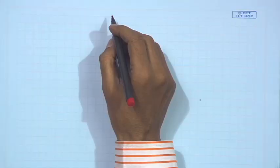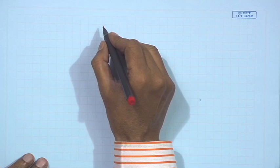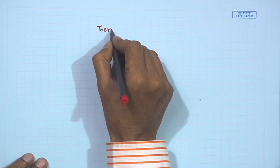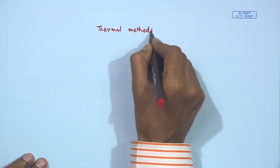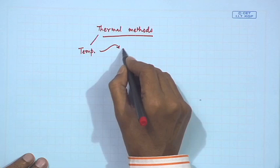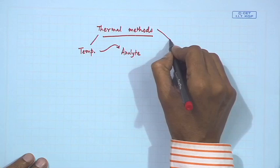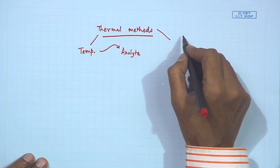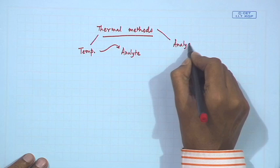Hello and welcome to this class of thermal analysis. In this lecture 31 of week 7, we will discuss thermal methods — different thermal methods where we see the temperature effect on the sample or analyte to change certain properties, giving us information about the physical as well as chemical properties. This is a very useful technique.